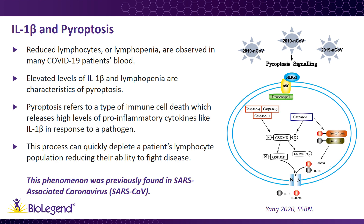Pyroptosis refers to a specific type of cell death in which immune cells respond to pathogens by activation of inflammasomes, leading to activation and secretion of pro-inflammatory cytokines like IL-1β. During this process, the immune cells die, but the release of pro-inflammatory cytokines leads to the recruitment of additional immune cells. The process helps eliminate the intracellular pathogen by destroying its host cell, but can quickly lead to a depletion of lymphocytes in the patient, greatly limiting their ability to fight off the virus and recover from diseases like COVID-19. This phenomenon has been documented in SARS-associated coronavirus, or SARS-CoV, which has led some to suggest a similar role in the SARS-CoV-2 response.